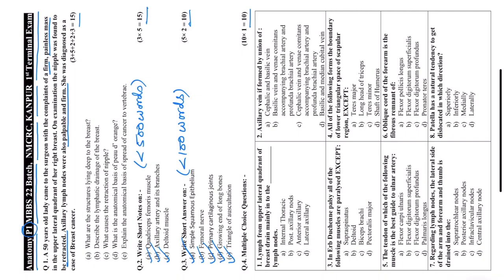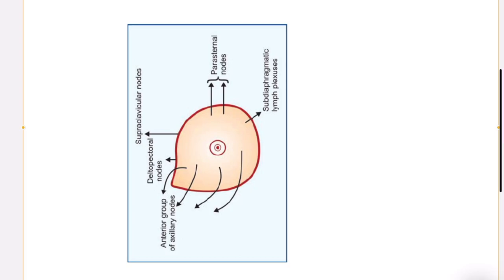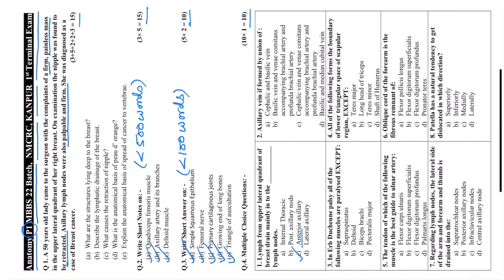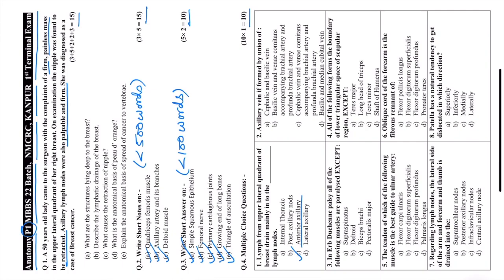MCQ 1: Lymph from the upper lateral quadrant of the breast drains mainly into which lymph nodes — internal thoracic, posterior axillary, anterior axillary, or lateral axillary? The lateral half, especially the upper outer quadrant, drains mainly into the anterior group of axillary lymph nodes, also called the pectoral group. This occurs through the axillary tail of Spence, passing through the foramen of Langer — a perforation in the pectoral fascia — to drain into the anterior axillary nodes.